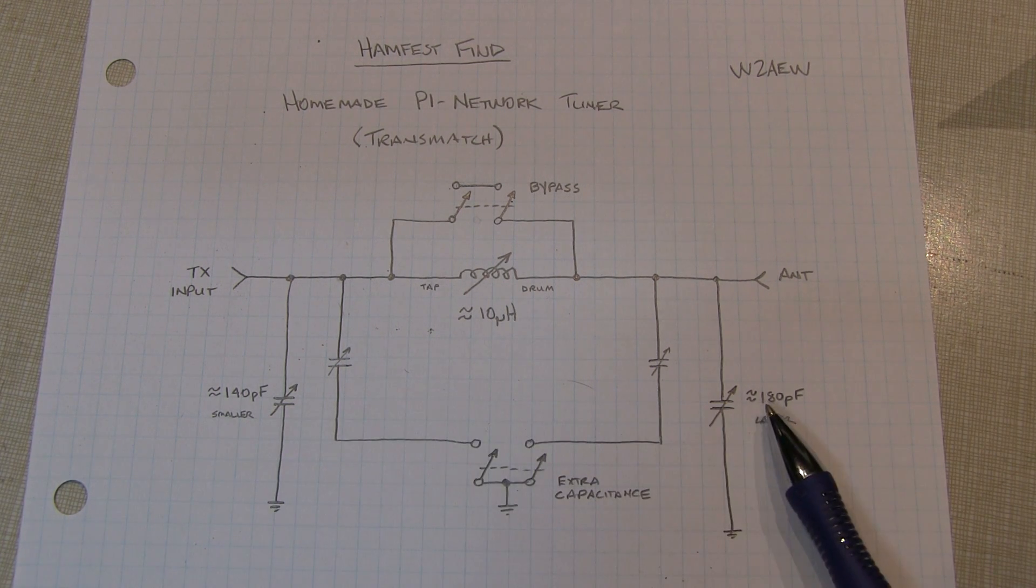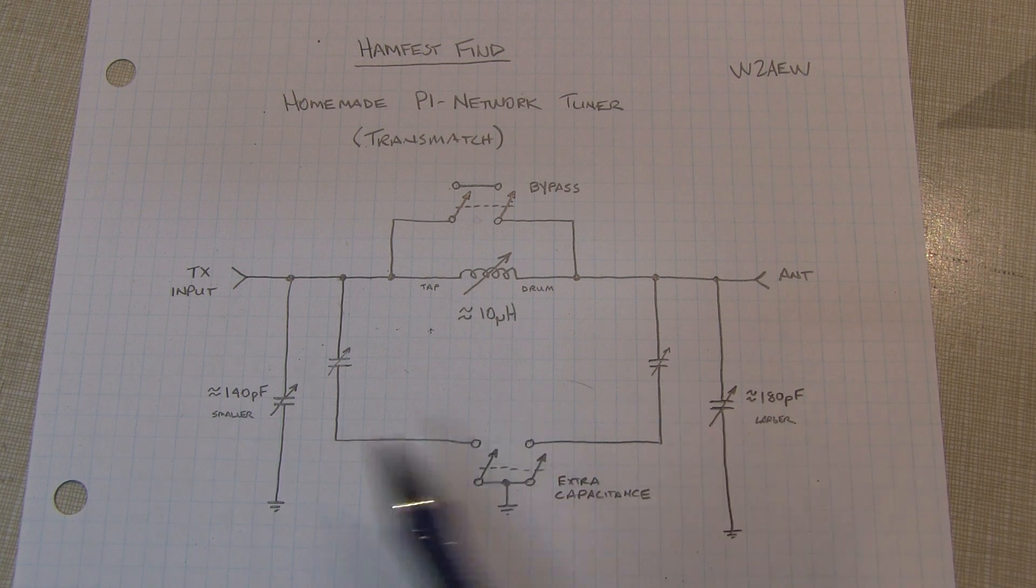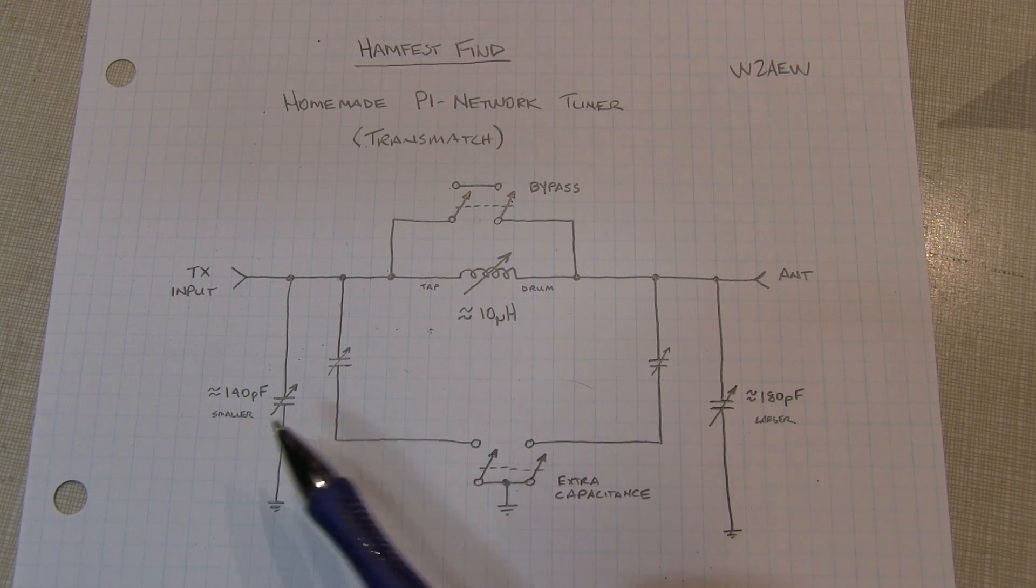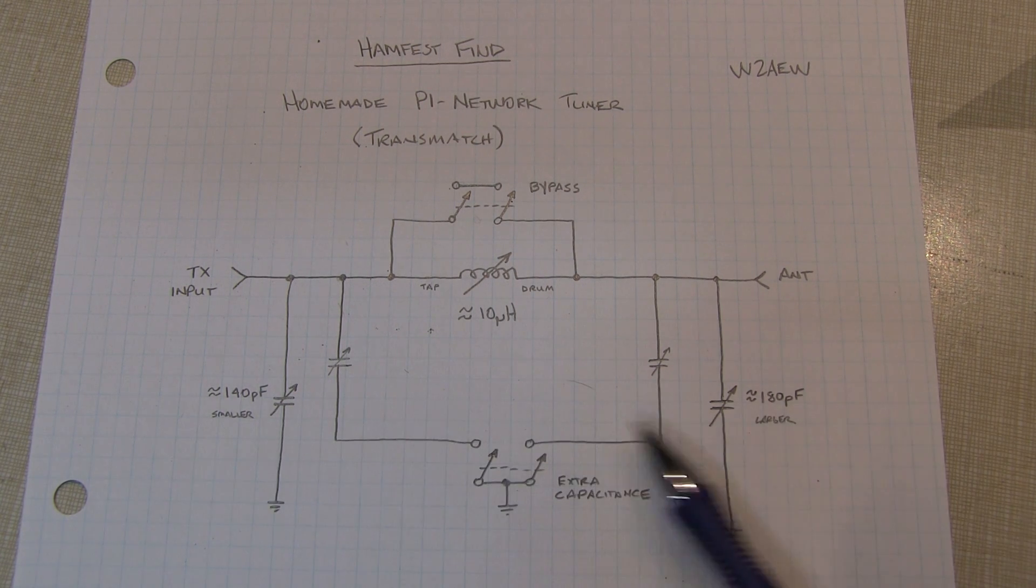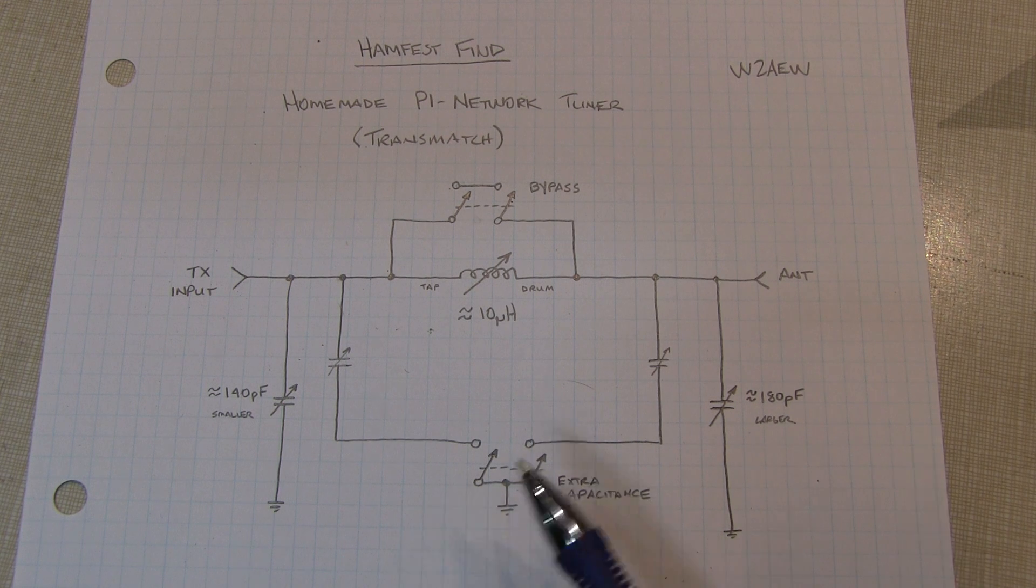And those are going to be pretty small in terms of usable values, especially at lower frequencies, probably 75 meters and certainly 160. I doubt that we'd get enough capacitance for 160 even with these extra capacitors switched in. But the tuner will probably work well from 40 on up or certainly 20 meters on up without any problem.